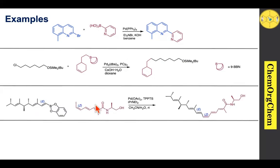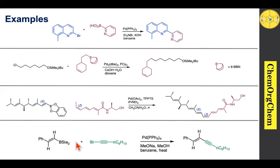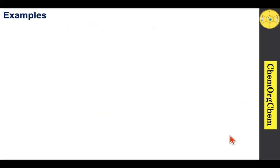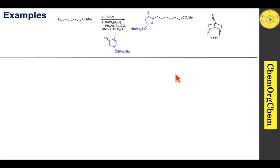As stated in the introduction, the Suzuki reaction is highly useful for stereo- and regio-specific carbon-carbon bond forming reactions. A borane part readily couples with an iodo part to produce the corresponding product where the alkene geometry — both E and Z — is preserved after the Suzuki reaction. In another example, a disiamylborane part readily couples with an alkenyl bromide in the presence of palladium(0) to produce the corresponding enyne.